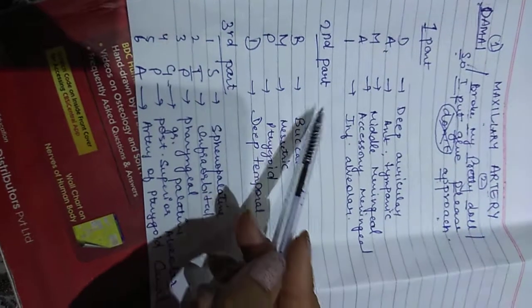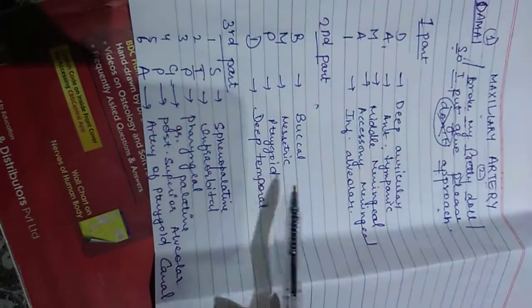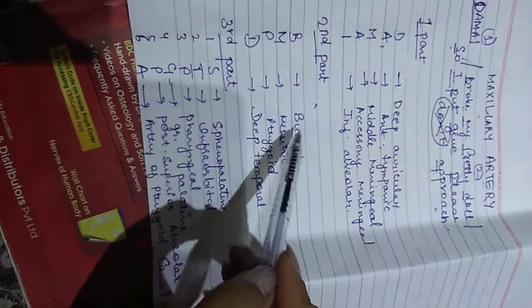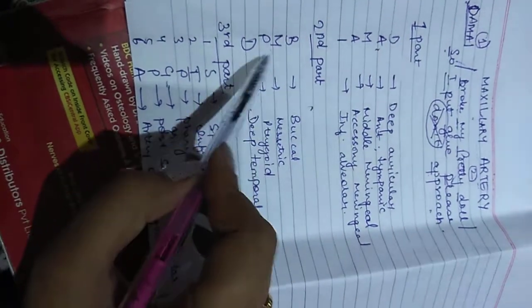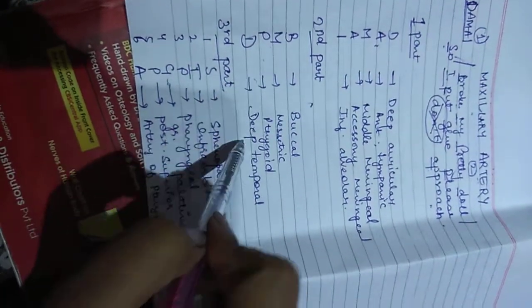Coming to the second part of maxillary artery, we have four branches coming out: B stands for buccal, M for masseteric, P for pterygoid, D for deep temporal.